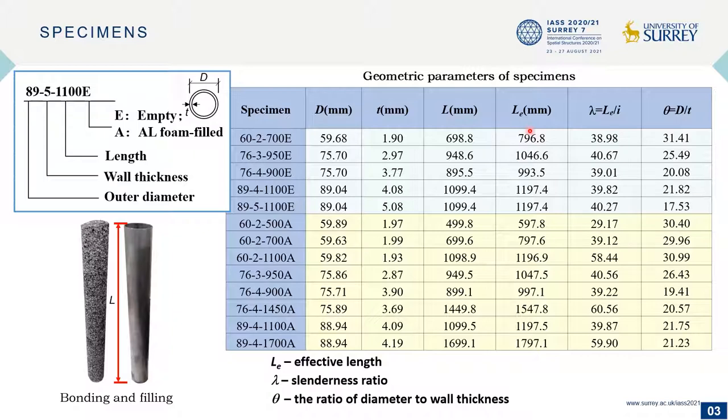The parameters considered in the axial compressive test include section size, length, slenderness ratio, and the ratio of diameter to wall thickness, as well as tubes which were empty of aluminum foam filler.